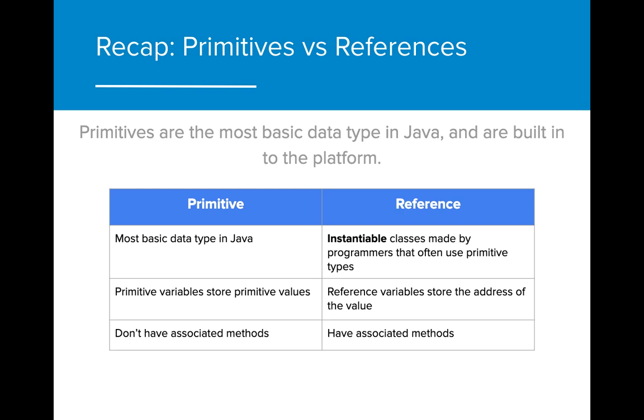We know that there are differences between primitive and reference types in Java. Each of the primitive types—int, double, et cetera—are built into the language, while objects and classes are created by the programmer.